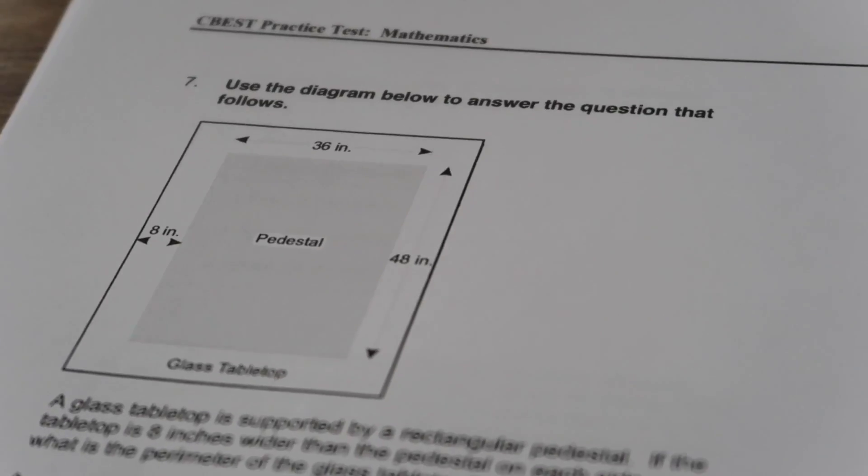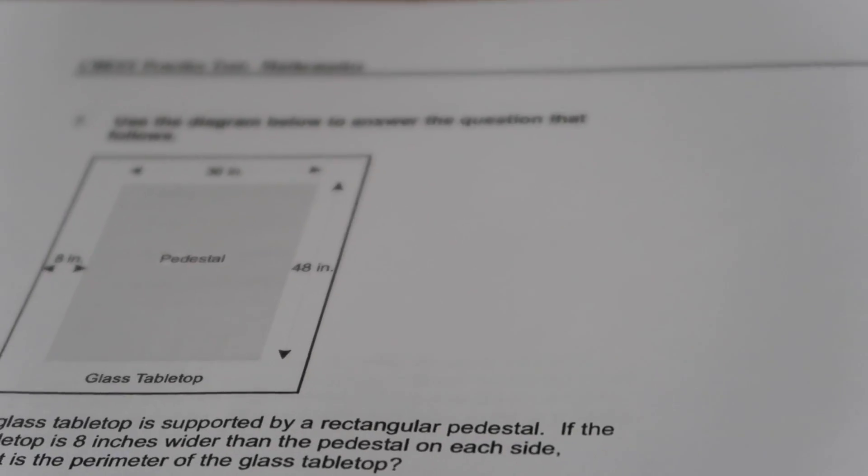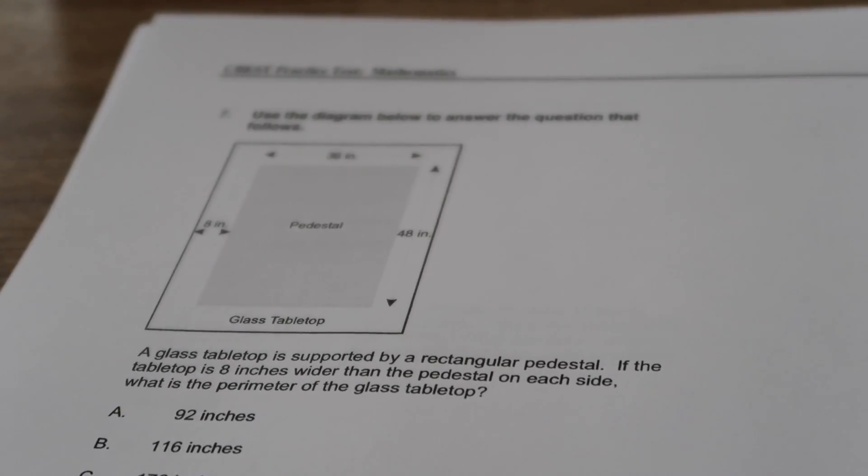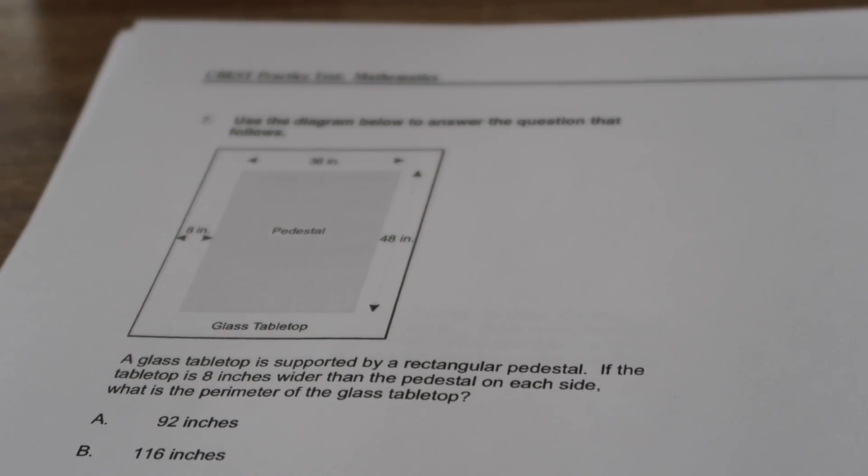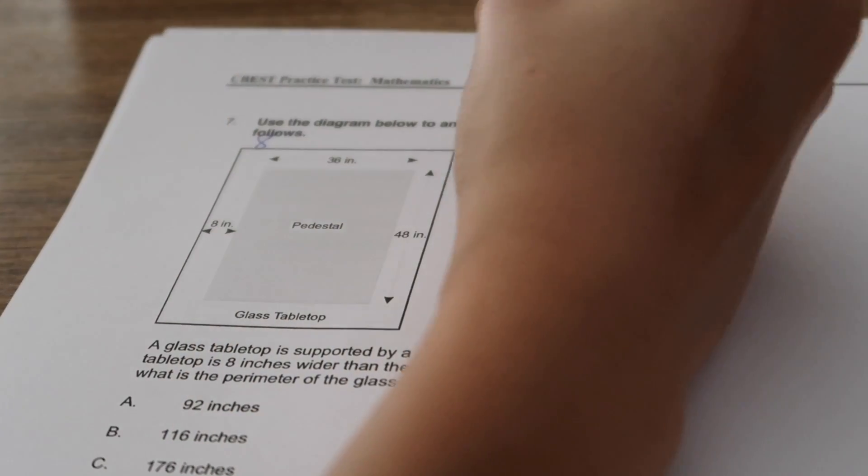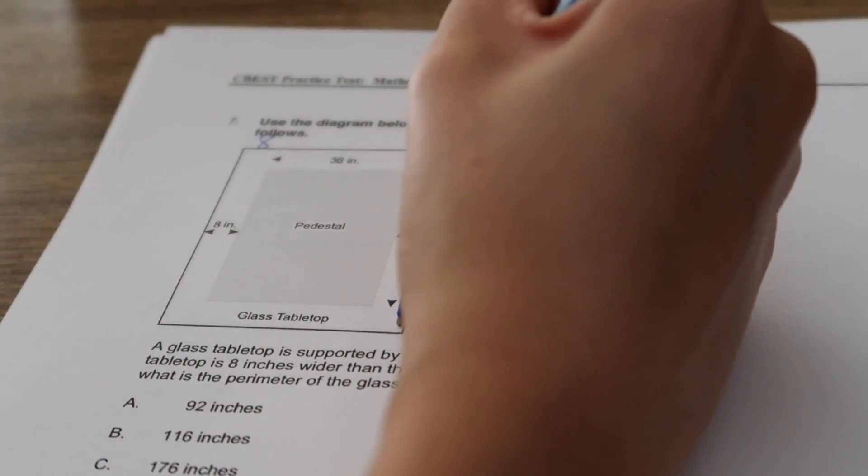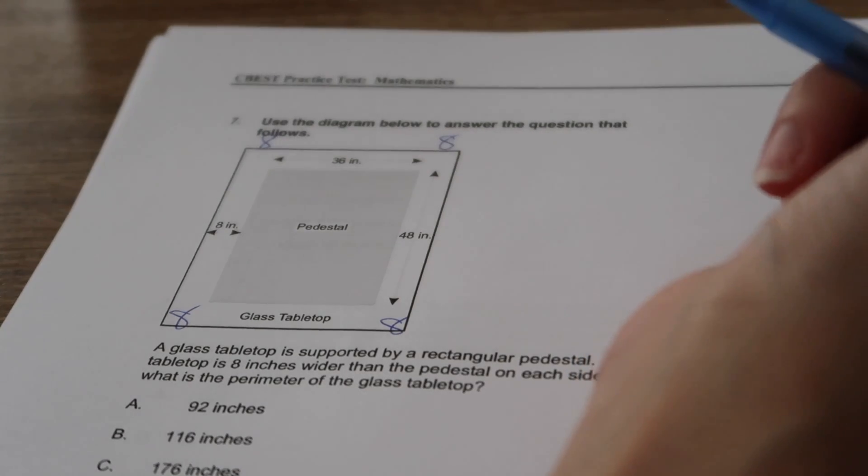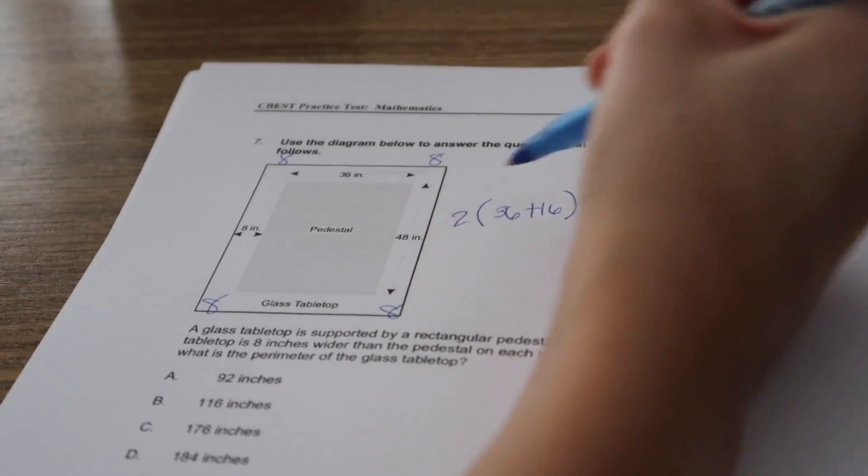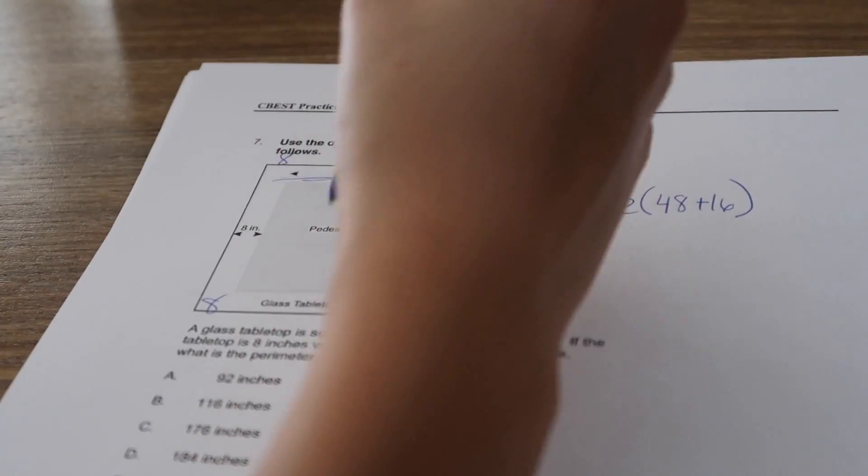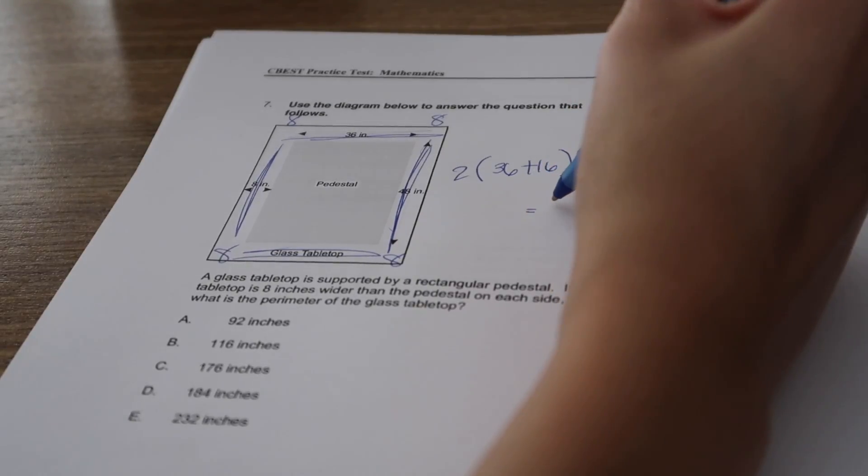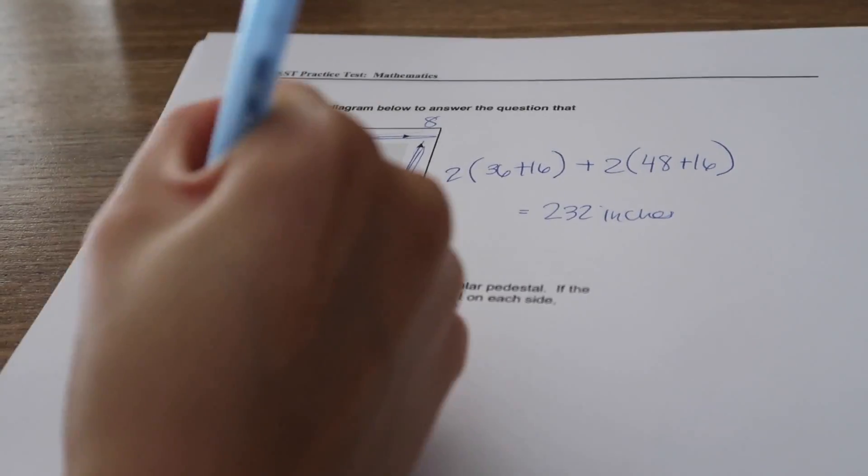This one was a little confusing at first and then I finally got it. The glass tabletop is supported by a rectangular pedestal. If the tabletop is eight inches wider than the pedestal on each side, what is the perimeter of the glass tabletop? I'm going to add eight on this side and add eight on this side, which is really adding 16. By equation it looks like this: plus eight plus 16, and then I'm going to multiply each one by two because there's this side and this side and then there's this side and this side. So my total is 232 inches, which is A.